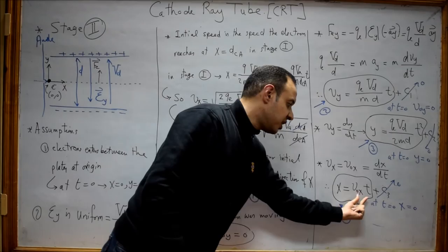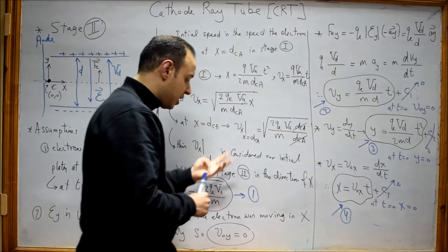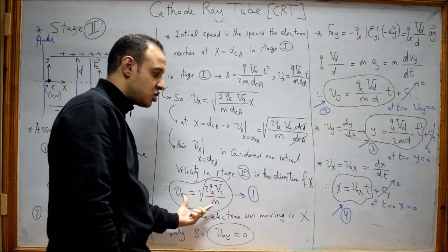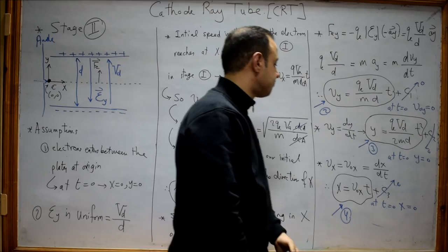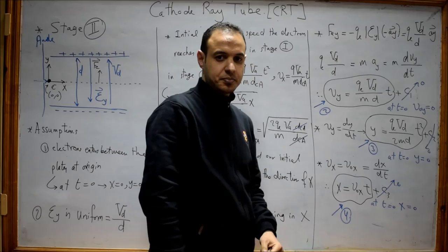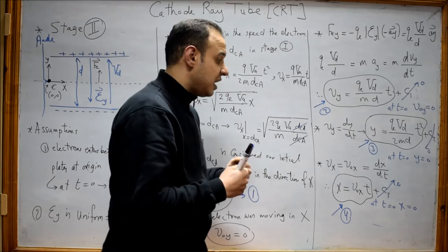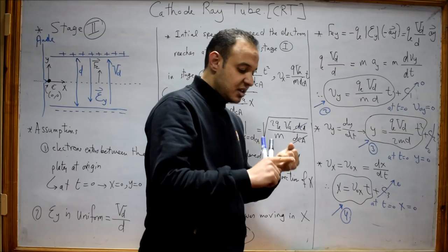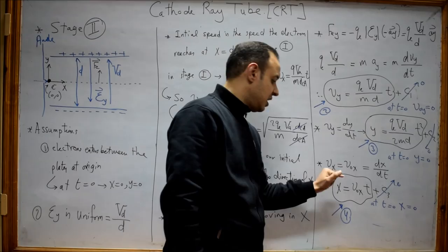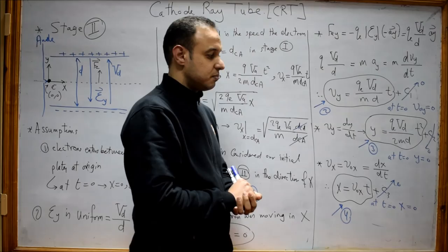We now have the complete picture with four equations: the velocity in X (constant at V0X), the velocity in Y (proportional to time), the displacement in Y, and the displacement in X. There is one last thing to do: determine the equation of motion, which relates the coordinates X and Y to each other. The motion has no component in the Z direction, so we only have X and Y. In the next part, we will determine this equation relating X to Y.